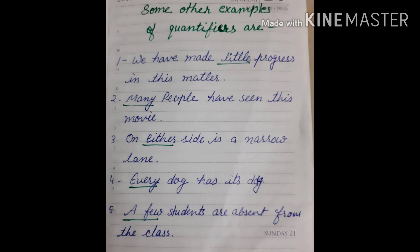Some other examples of quantifiers: 'We have made little progress in this matter.' 'Many people have seen this movie.' 'On either side is a narrow lane.' 'Every dog has its day.' 'A few students are absent from the class.' In the above sentences, the underlined words — little, many, either, every, a few — are determiners.